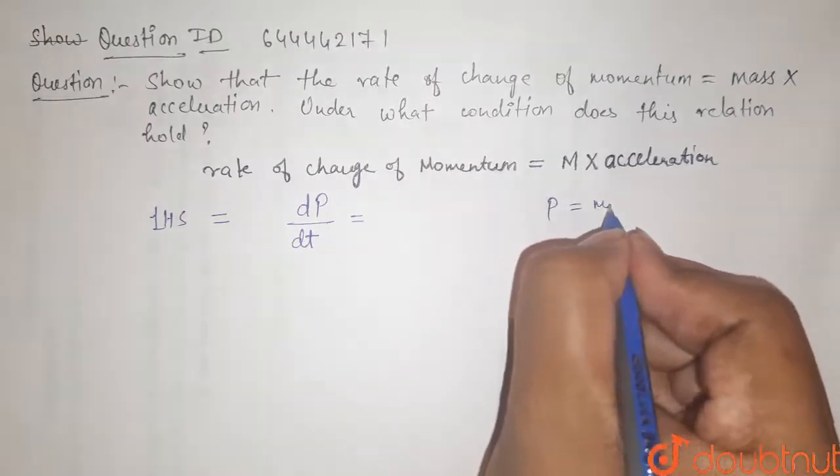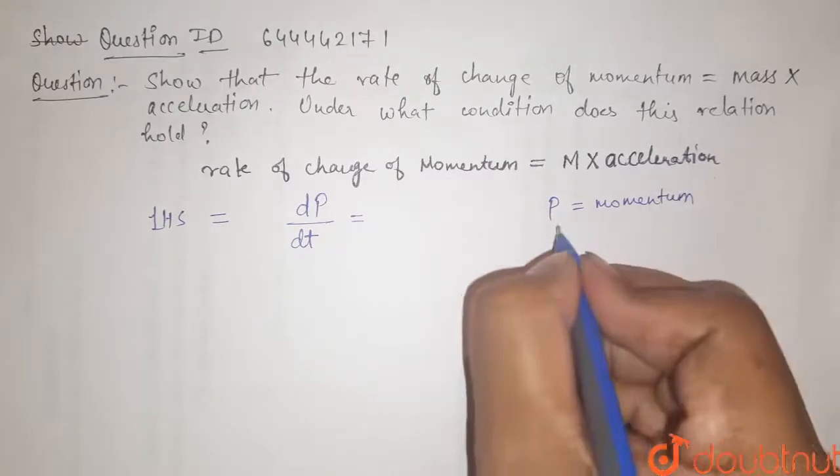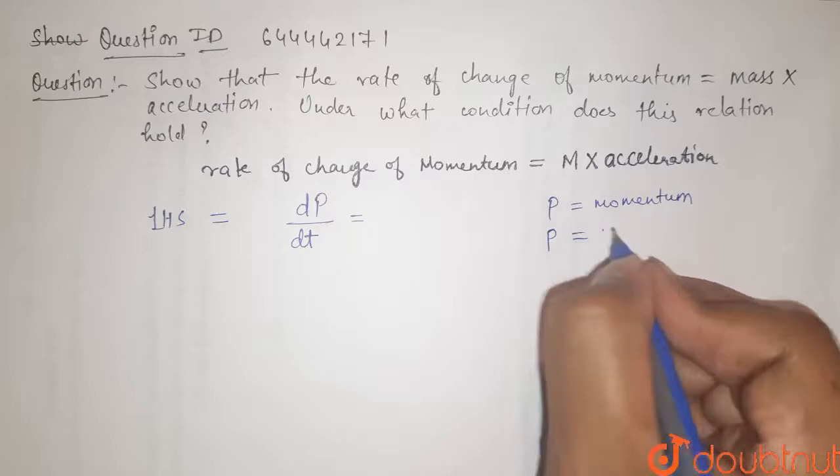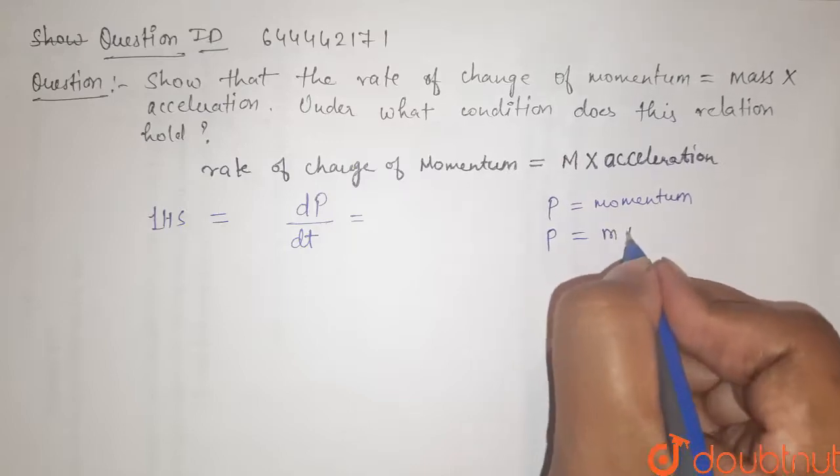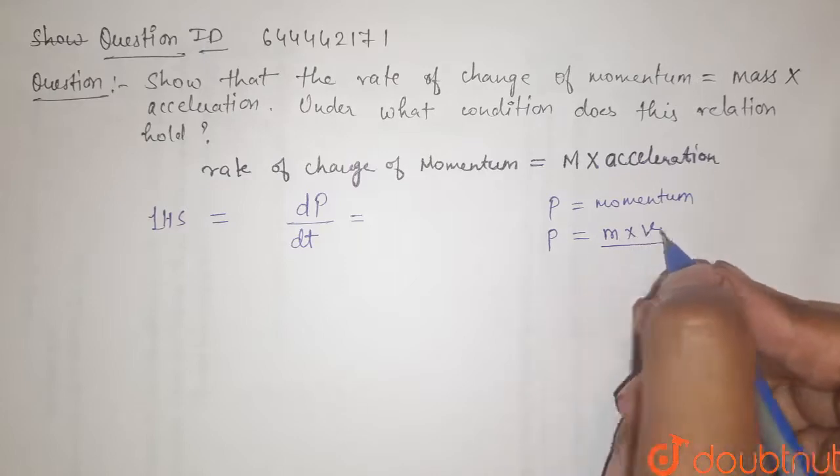p is what? p is momentum, and we have the value of momentum is equal to what? It is mass into velocity. So this is our momentum.